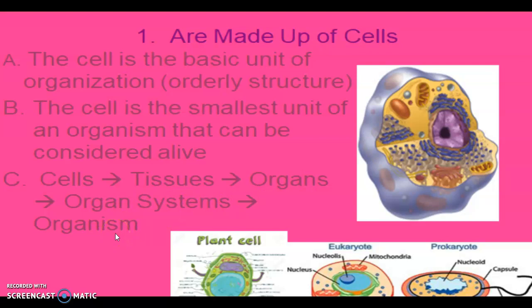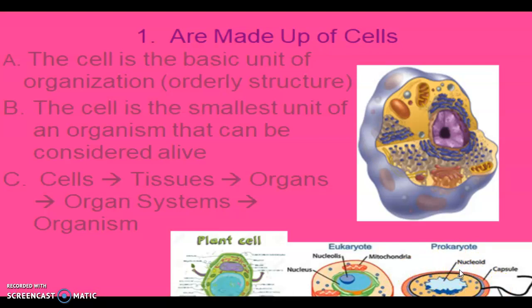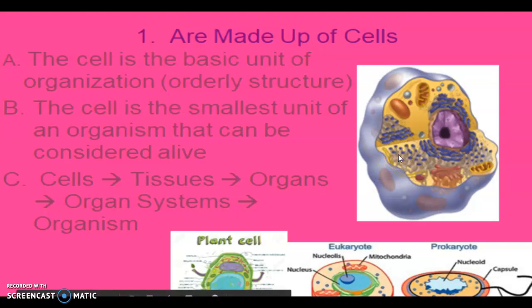Some organisms are more complicated than others. Some organisms are only single-celled, like this prokaryote — those are bacteria. Some organisms are multicellular, meaning they're made of many cells, like this plant. Plants are made of multiple plant cells, and animals are made of multiple cells as well.